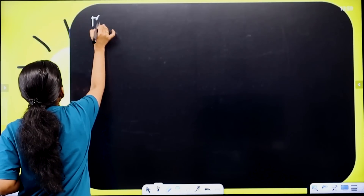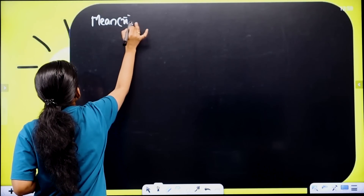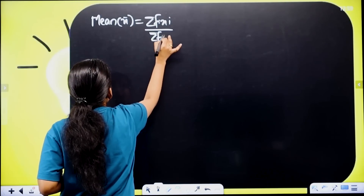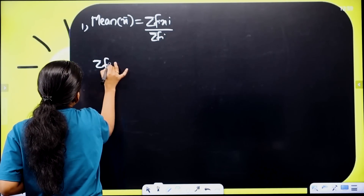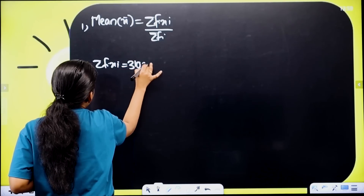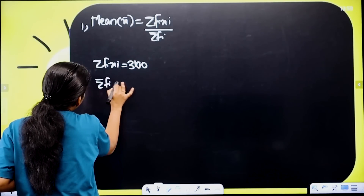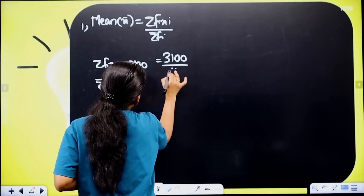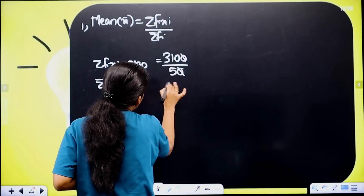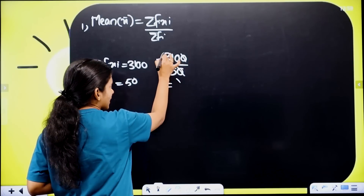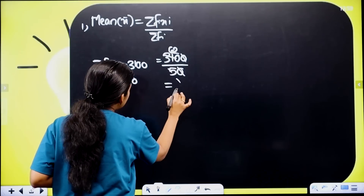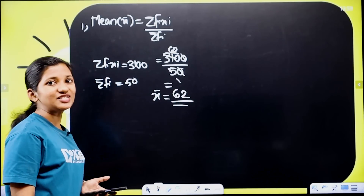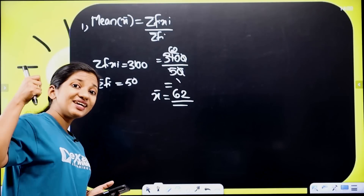Mean: first question answer. Mean x̄ equal to sigma fi xi divided by sigma fi. Here sigma fi xi equal to 3100 and sigma fi equal to 50. So 3100 divided by 50 — cancel zeros — mean equal to 62. So x̄ equal to 62. First question answer obtained.